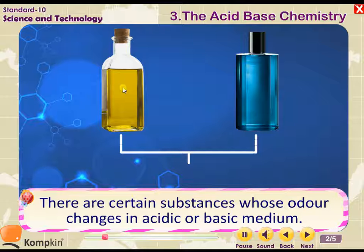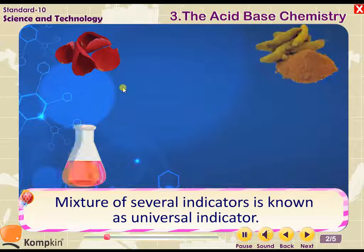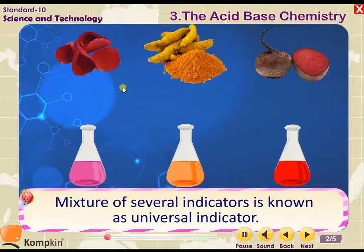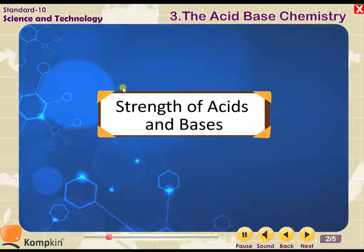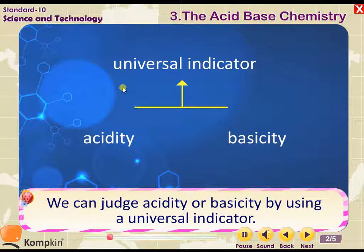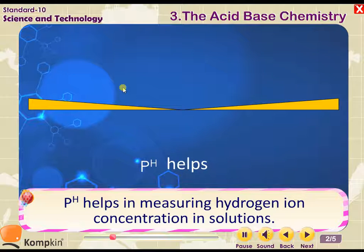There are certain substances whose odor changes in acidic or basic medium. These substances are known as olfactory indicators. A mixture of several indicators is known as a universal indicator. We can judge acidity or basicity by using a universal indicator and the pH scale.